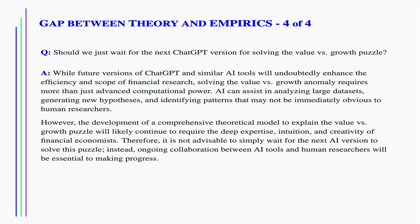Should we just wait for the next ChatGPT version for solving the value versus growth puzzle? While future versions of ChatGPT and similar AI tools will undoubtedly enhance the efficiency and scope of financial research, solving the value versus growth anomaly requires more than just advanced computational power. AI can assist in analyzing large datasets, generating new hypotheses, and identifying patterns that may not be immediately obvious to human researchers. However, the development of a comprehensive theoretical model will likely continue to require the deep expertise, intuition, and creativity of financial economists. Therefore, it is not advisable to simply wait for the next AI version. Instead, ongoing collaboration between AI tools and human researchers will be essential to making progress.